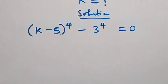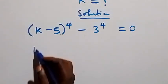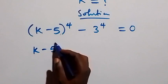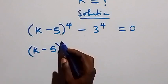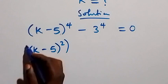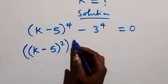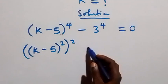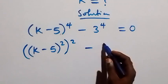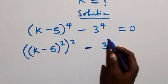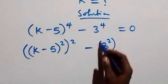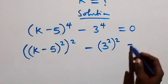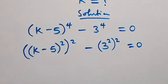And here we can rewrite this as k minus 5 raised to power 2, then also raised to power 2 — that is, 2 times 2 will still be 4 — then minus 3 raised to power 2, which is also raised to power 2, equals to 0.